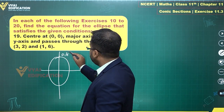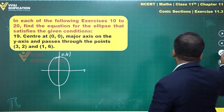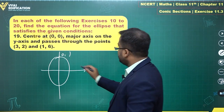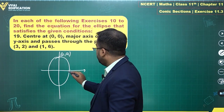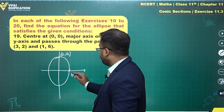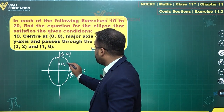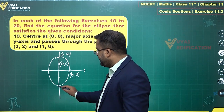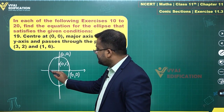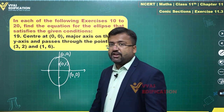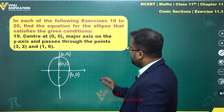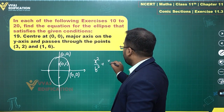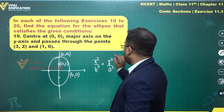The top vertex is 0 comma a, since this is the major axis. This will be represented by 0 comma a. The end of the minor axis is b comma 0, and the focus is at 0 comma c. The other focus will be 0 comma minus c, the other end of the major axis will be 0 comma minus a, and the other end of the minor axis will be minus b comma 0.